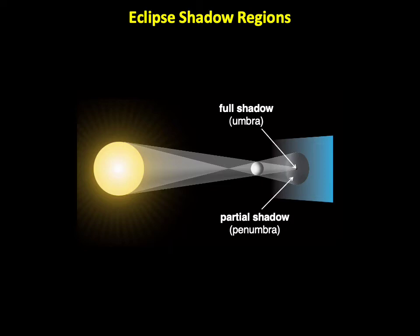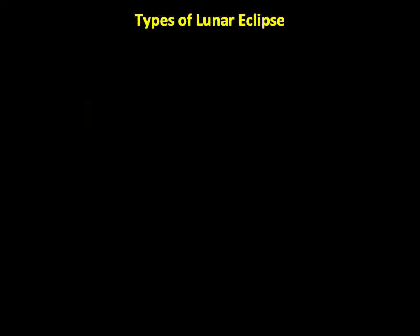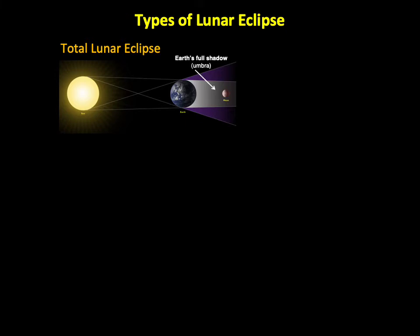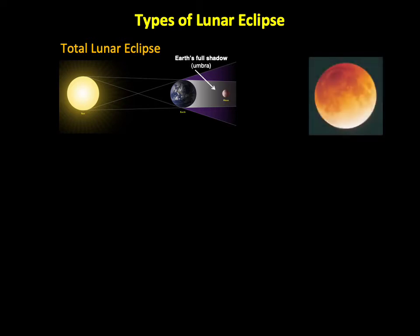This idea explains why lunar eclipses come in three types. We see a total lunar eclipse when the Moon is within Earth's full shadow. No direct sunlight falls on the Moon at this time, but the Moon takes on a red tinge, because it is slightly illuminated by the glow of all the sunrises and sunsets that ring our planet, as seen from the Moon at that time.